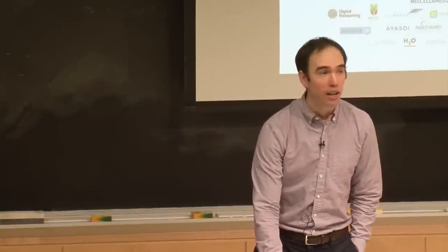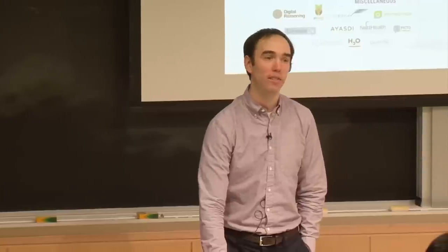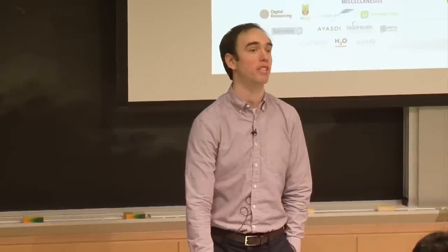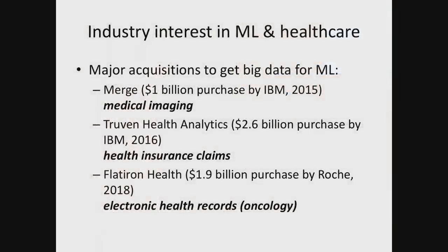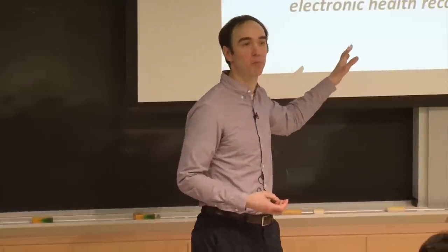Recognition that data is essential has led to an all-out purchasing effort. IBM purchased Merge — a medical imaging software company with accumulated imaging data — for $1 billion in 2015. They purchased Truven for $2.6 billion in 2016. Flatiron Health, a company focused on oncology, was purchased for almost $2 billion by Roche in 2018. Access to data is a really important factor in this field.